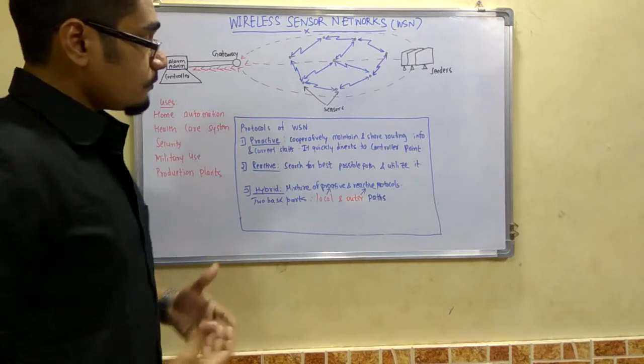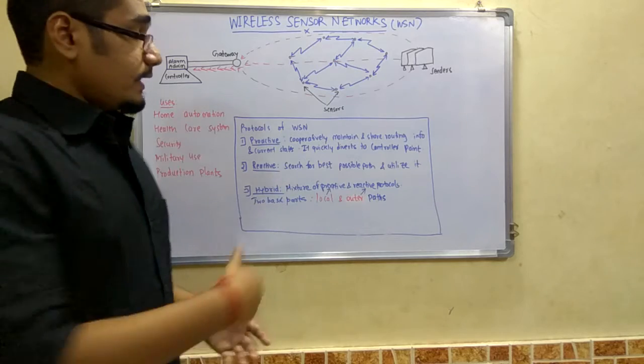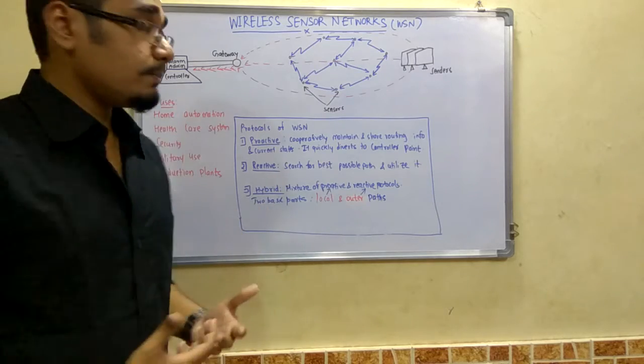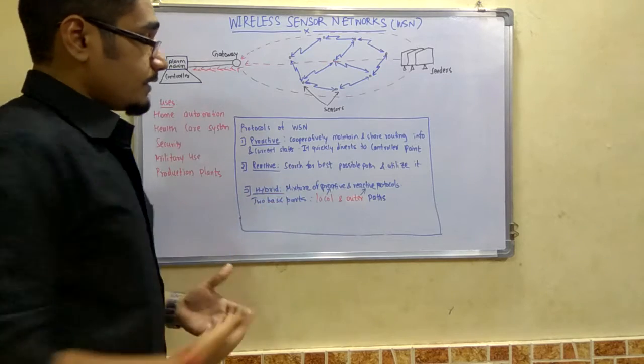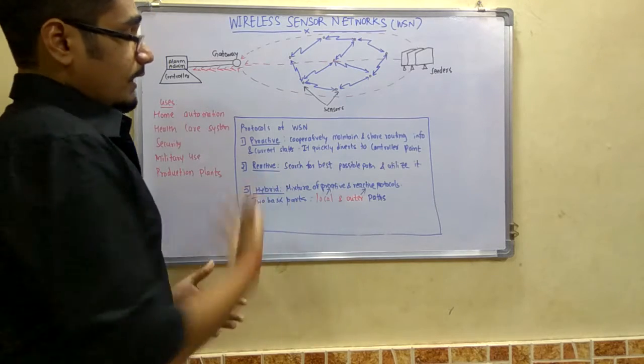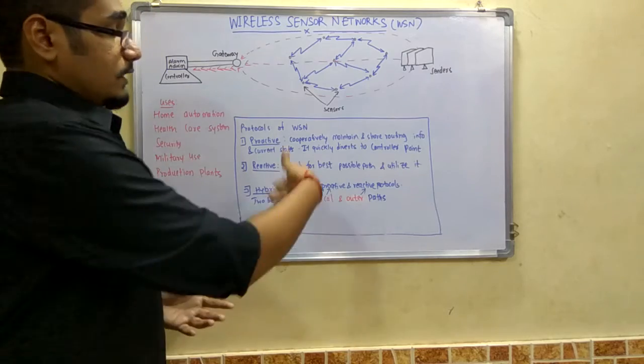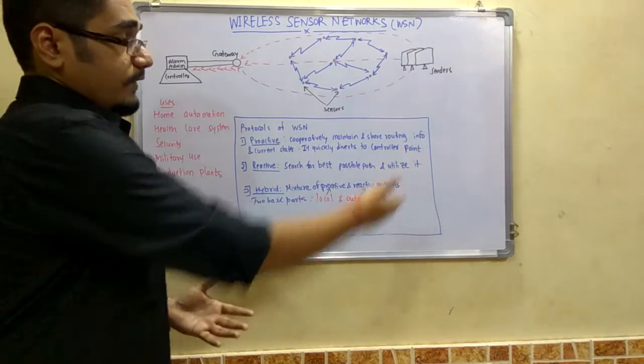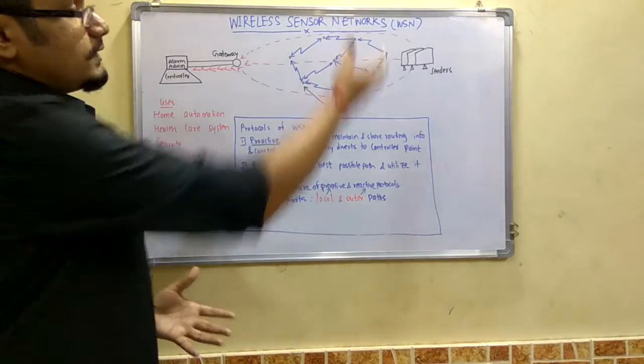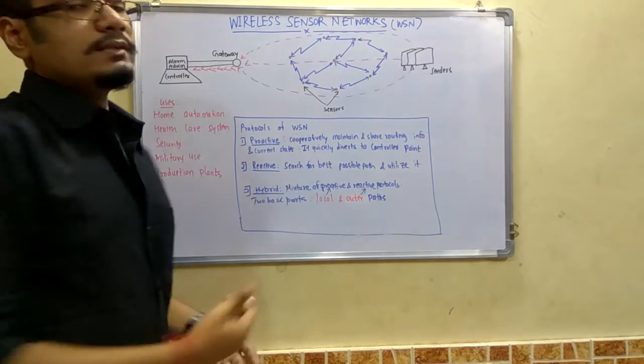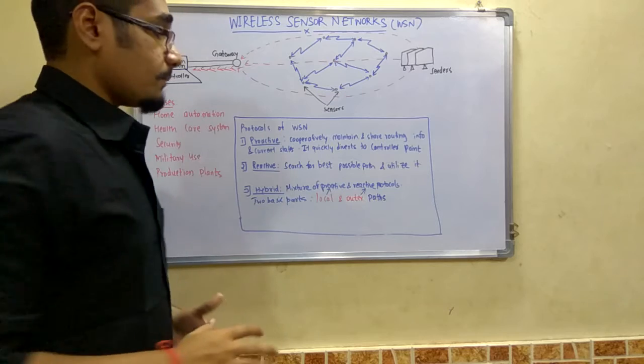Next is the reactive mode. In reactive mode, it will search for the best possible path and utilize it. Reactive mode is similar to proactive mode, but it searches for the best path out of various other points and gives it to the sensor network so it can utilize it in a better and more efficient manner.